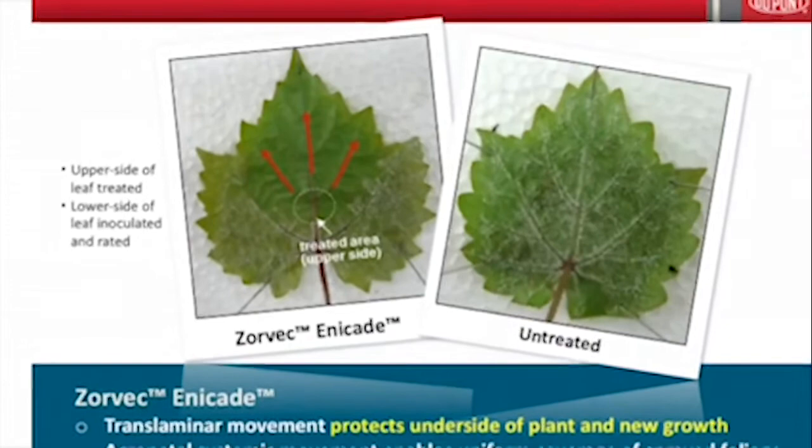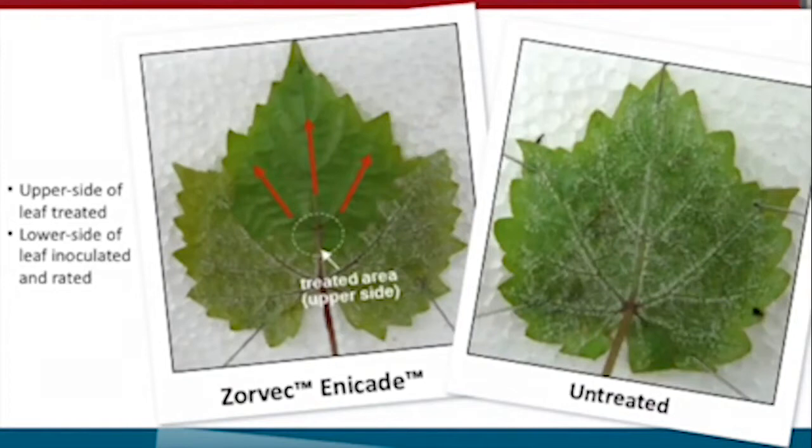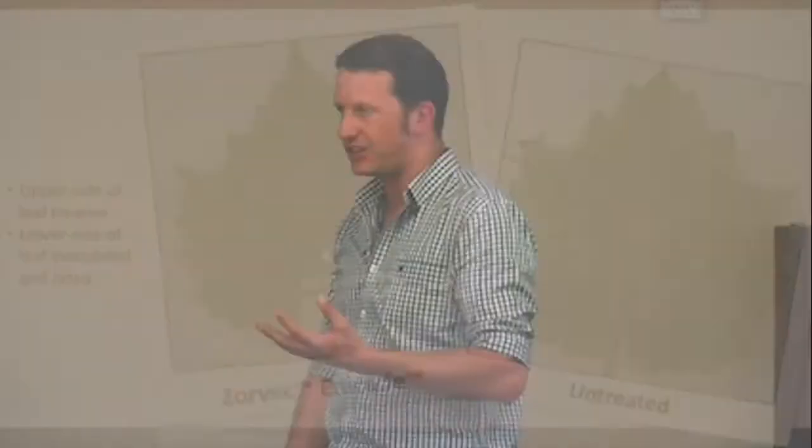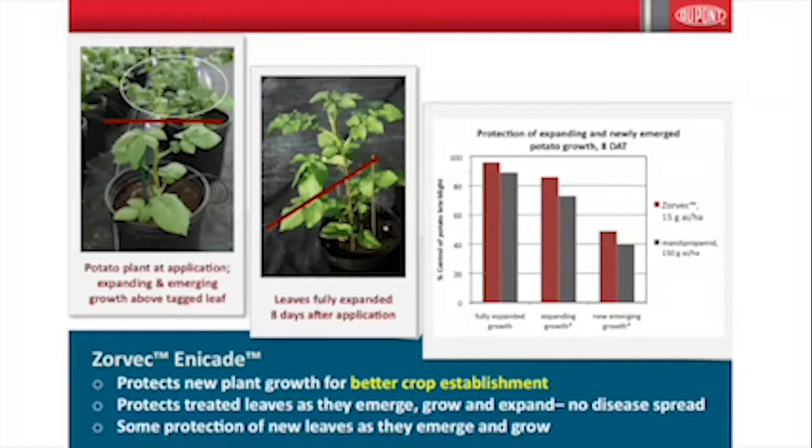The translaminar movement — the true acropetal movement through the leaf — is demonstrated by a graph showing a grape leaf treated on the upper side with Zorvec Encade, then inoculated on the lower side with downy mildew. You can see the protection through to the underside and outward compared to the untreated. This translaminar property is really good at protecting expanding new growth and overcoming shading or coverage issues.